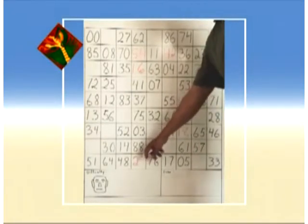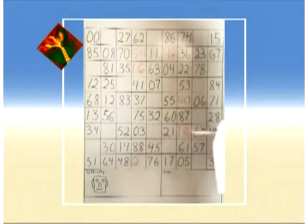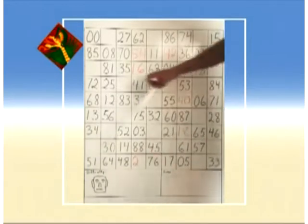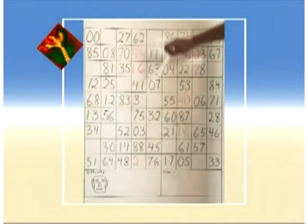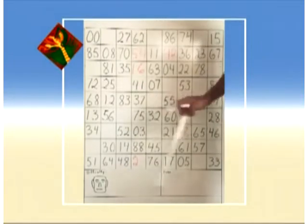Now we check this number and see which one is missing. We see we have 8, 3, 5, 7, 1, 6, 4, and 2. We are missing a 2.